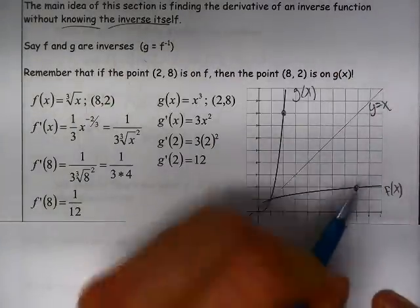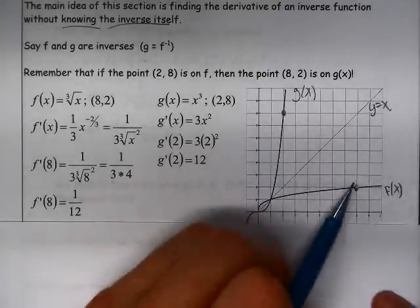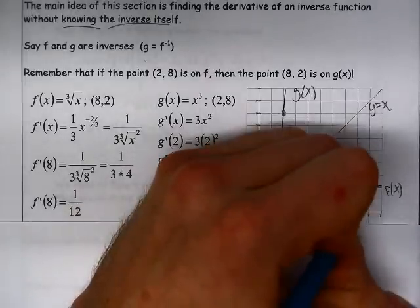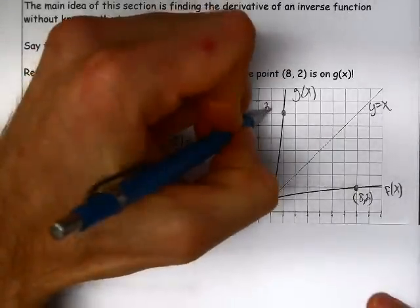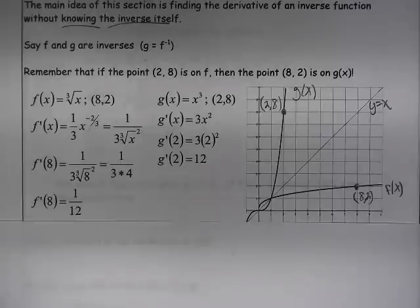If we have a point on f of x and we reflect it in y equals x, we get the inverse. And here the coordinates are (8,2), and that point reflected across y equals x gives us its inverse, and the point there is (2,8).